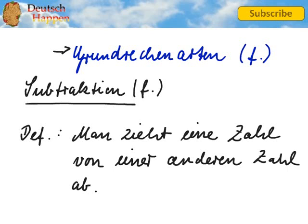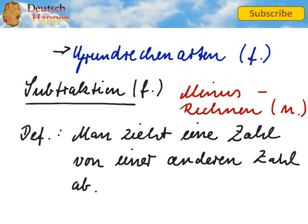If you want to say this in German it's also particularly in elementary school referred to as Minusrechnen. So let me write this for you. Minusrechnen. And this is then neutral. So we would say das Minusrechnen but die Subtraktion.